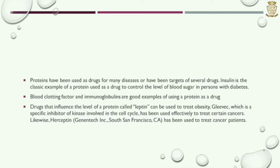Proteins have been used as drugs for many diseases or have been targets of several drugs. Insulin is the classic example of a protein used as a drug to control the level of blood sugar in persons with diabetes. Blood clotting factor and immunoglobulins are good examples of using a protein as a drug. Drugs that influence the level of a protein called leptin can be used to treat obesity. Gleevec, which is a specific inhibitor of kinase involved in the cell cycle, has been used effectively to treat certain cancers.